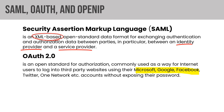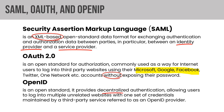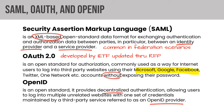OAuth 2.0 is an open standard for authorization by authenticating users using their Microsoft, Google, Facebook, or Twitter social accounts without exposing their password — you use these every day. OpenID is another open standard that provides decentralized authentication, allowing users to log into multiple unrelated websites with one set of credentials using a third-party OpenID provider. OAuth 2.0 was developed by the Internet Engineering Task Force and is updated through RFC. Microsoft, Google, and Facebook are all OAuth 2.0 compatible providers.